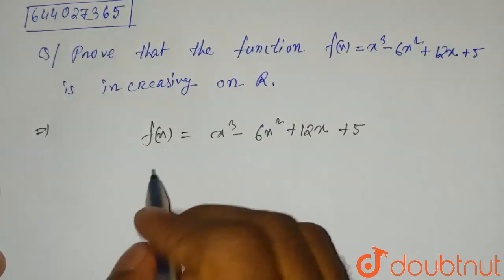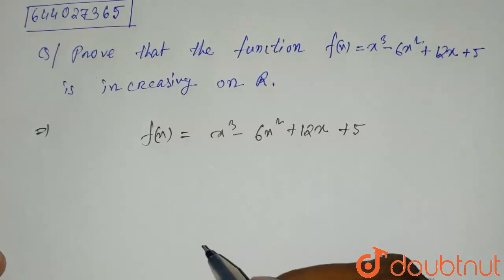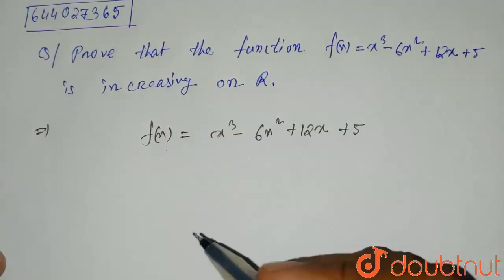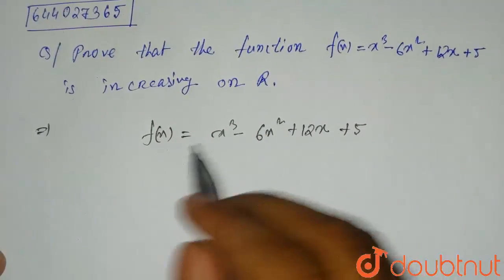As per the rule, we have to differentiate this function. Then if the differentiation is greater than 0, we can say that the function is increasing on R. So let's find the differentiation.